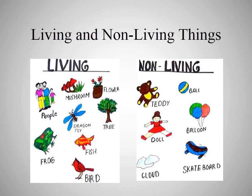As you can see here are some examples of living things and non-living things. Living things are those which can grow and can breathe. Non-living things cannot grow and do not breathe. Examples of living things include mushroom, flower, tree, dragonfly, frog, and people — whether it is an animal, a plant, or a human being. They all can grow and breathe.